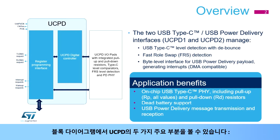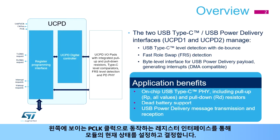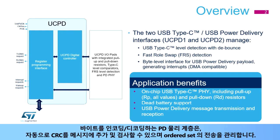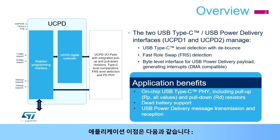The block diagram shows the two important parts of the UCPD module. The register interface on the left, clocked by PClock, is used by software to configure and determine the current state of the module. Messages are transferred byte per byte by means of the TX and RX registers. The PD physical layer encodes and decodes bytes, appends and checks the CRC, and also manages the transmission of ordered sets.